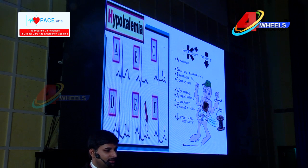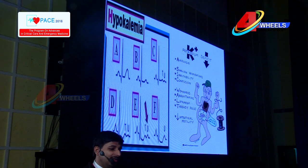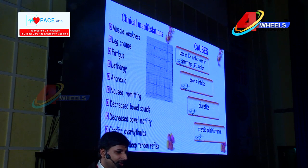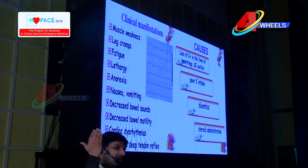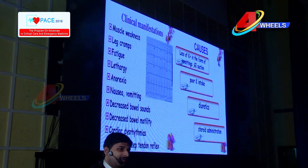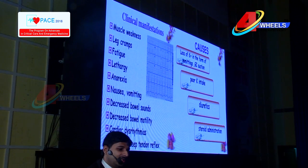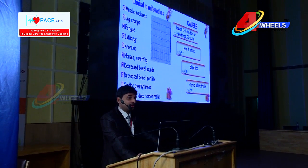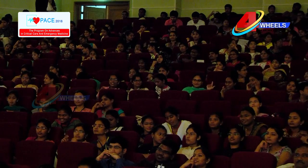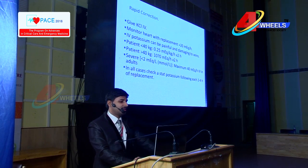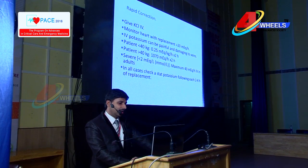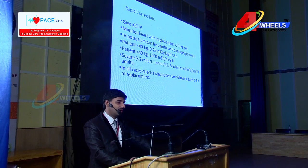Going into potassium — hypokalemia. With hypokalemia you will have alkalosis, shallow respiration, irritability, confusion, weakness, lethargy, adynamic ileus, thready pulse, and decreased intestinal motility. On ECG you can find T-wave flattening. Clinical manifestations include muscle weakness, leg cramps, fatigue, lethargy, nausea and vomiting, anorexia, decreased bowel sounds, decreased bowel motility, cardiac dysrhythmias, and depressed reflexes. For rapid correction, give KCl IV and monitor heart with replacement of greater than 20 mEq/hour. Always establish a central line, as IV potassium can be painful and damaging to veins.